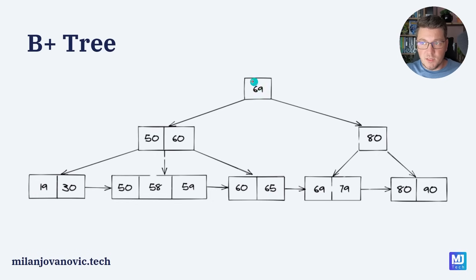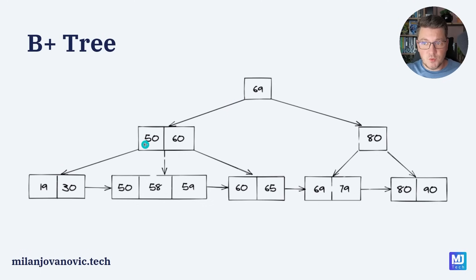If you aren't familiar with B+ trees, they have a few distinct rules. A value to the left of a node — a left child — has to be a smaller value than the value of that node, and values to the right are going to be greater than or equal to that value. So as you can see, left of 69 we have nodes with 50 and 60; left of node 50 we have 19 and 30; below it we have 50, 58 and 59; and to the right we have 60, 65, and so on.